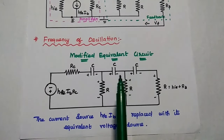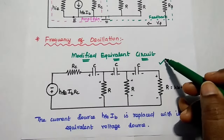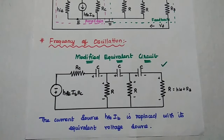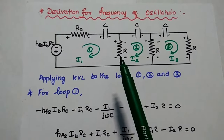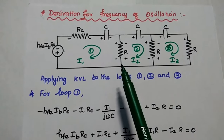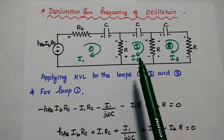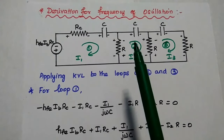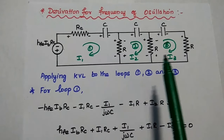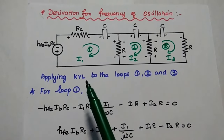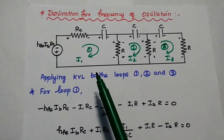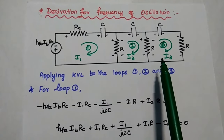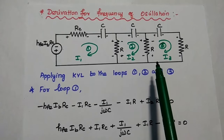Then we can get the modified equivalent circuit as the voltage source H_FE·I_B·R_C in series with the R_C resistor, then the feedback network, and the last one is H_IE + R3. We are going to use this modified equivalent circuit to derive the frequency of oscillation. We can consider the modified equivalent circuit with three loops — loop 1, loop 2, and loop 3 — with I1, I2, and I3 as the respective loop currents. We are going to apply Kirchhoff's voltage law to loops 1, 2, and 3.